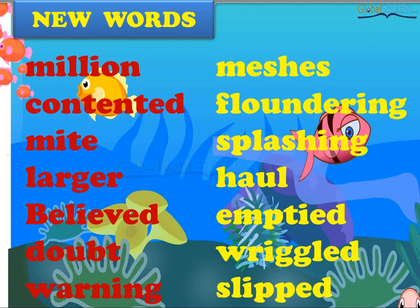Now come to the new words in this story, in this lesson. We have new words. We should know the spelling of the words. First one is: million — M-I-L-L-I-O-N.